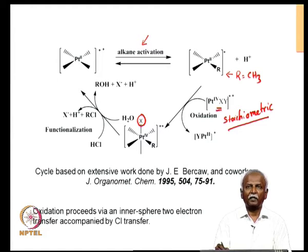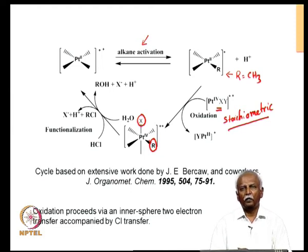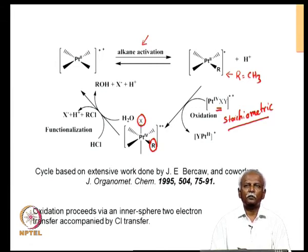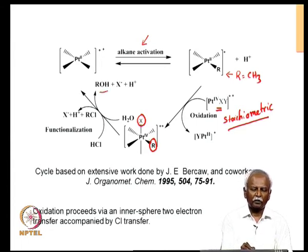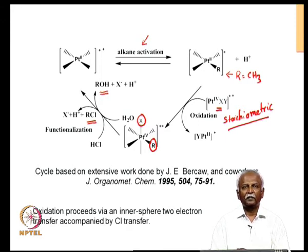Initially the X was present on the platinum 4 species; it has now been transferred to the platinum 2, and along with that 2 electrons have been transferred in an inner sphere way. This results in a platinum 4 complex which has got an X group and an R group. We can now do a reductive elimination from this platinum 4 species by eliminating R-X. If X is OH and there is not enough chloride concentration, you would end up eliminating R-OH; otherwise you would get R-Cl as the product. This regenerates the platinum 2 complex and so the catalytic cycle can continue.